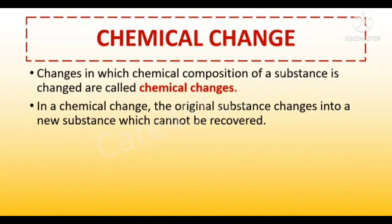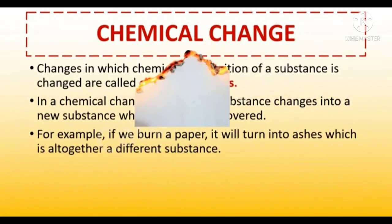Moving on to chemical change. Changes in which the chemical composition of a substance is changed are called chemical changes. In a chemical change, the original substance changes into a new substance which cannot be recovered. For example, if we burn a paper, it will turn into ashes, which is altogether a different substance.